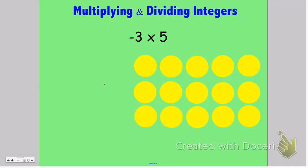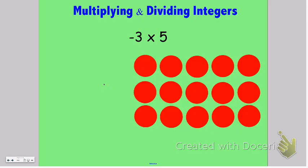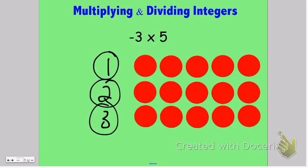So what I've done first is to make again three groups of just five, and again the yellows represent positive, but then because this says it is the opposite of three groups of five, I'm going to go ahead and change these all to negative. So again here I still have three groups of five, but it is the opposite of those three groups of five which gives me a negative 15.